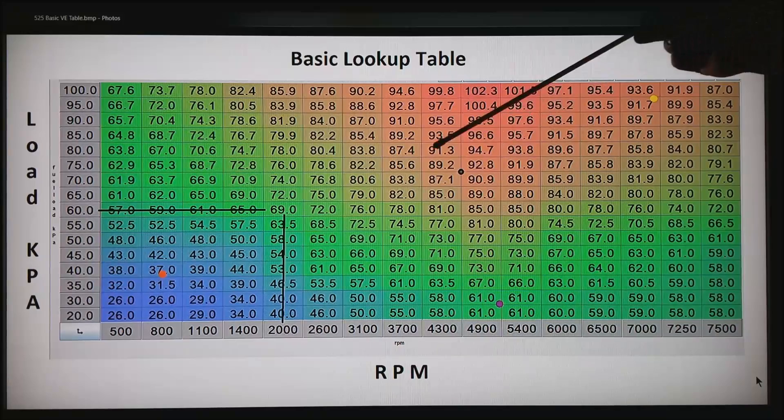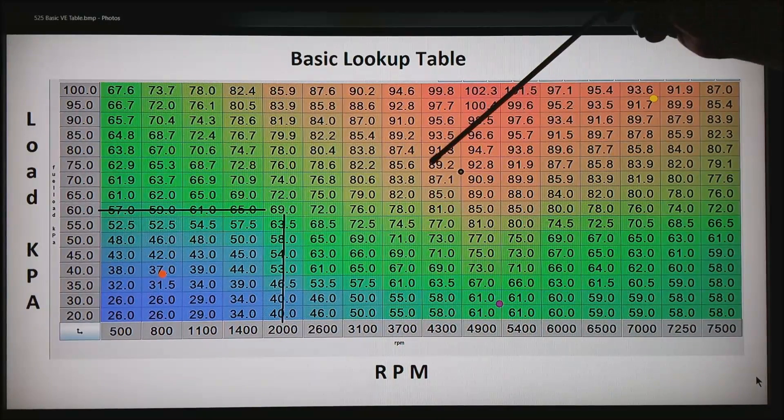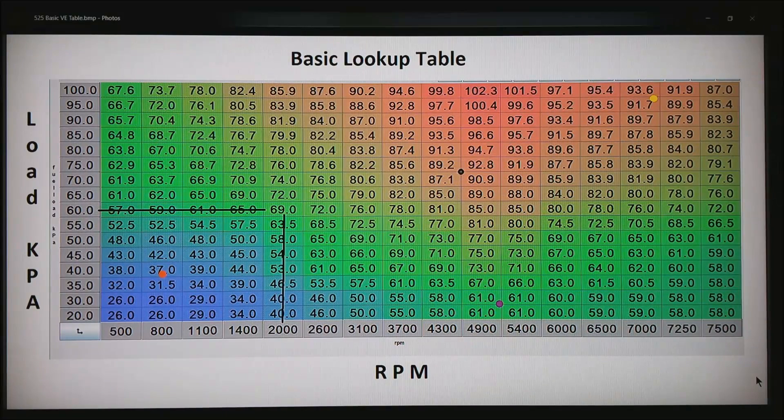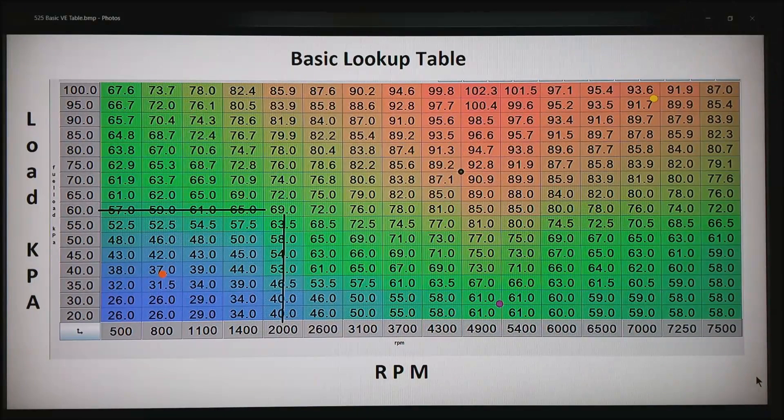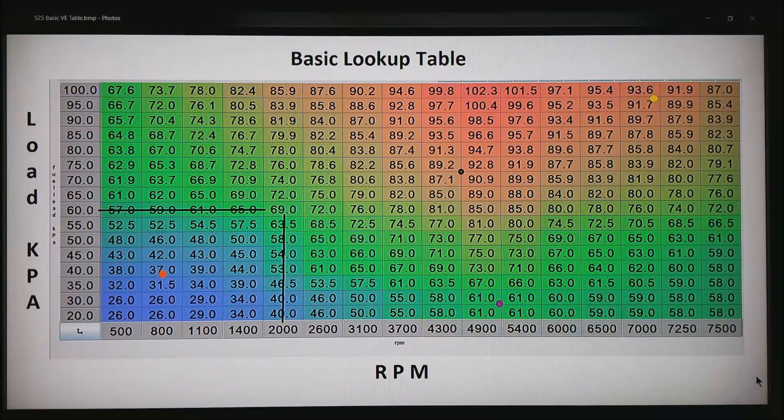What happens when you get a number that's right on the intersection is the code would take the addition of all four of these numbers, and if it's right in the center of the intersection it would evenly take the four numbers, add them together, divide by four, and we get an average of about 90.